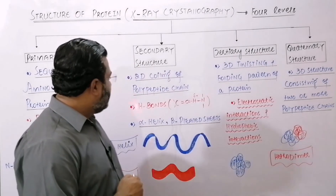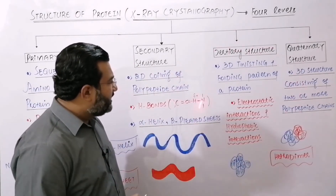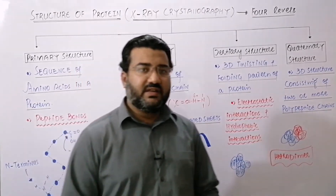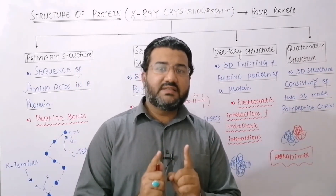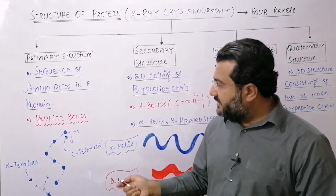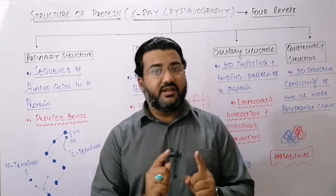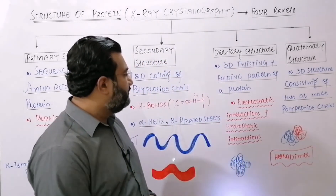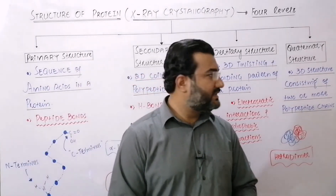Secondary structure is maintained by hydrogen bonds and tertiary structure is maintained by electrostatic and hydrophobic interactions. An important point is that primary structure is maintained by covalent bonds — the peptide bonds — while both the secondary and tertiary structures are maintained by non-covalent types of bonds or attractions.